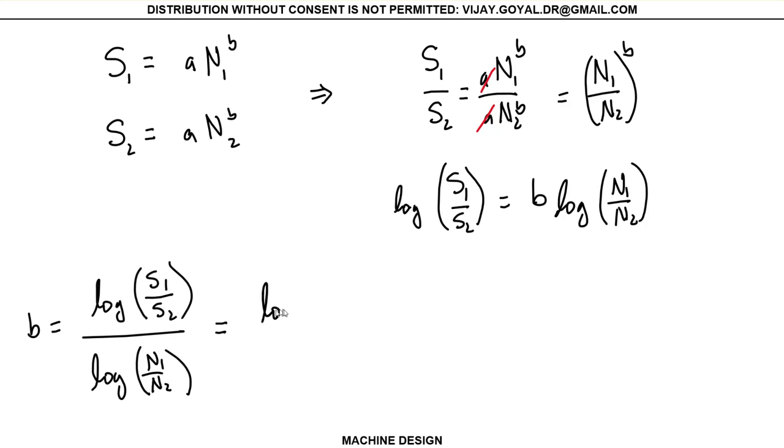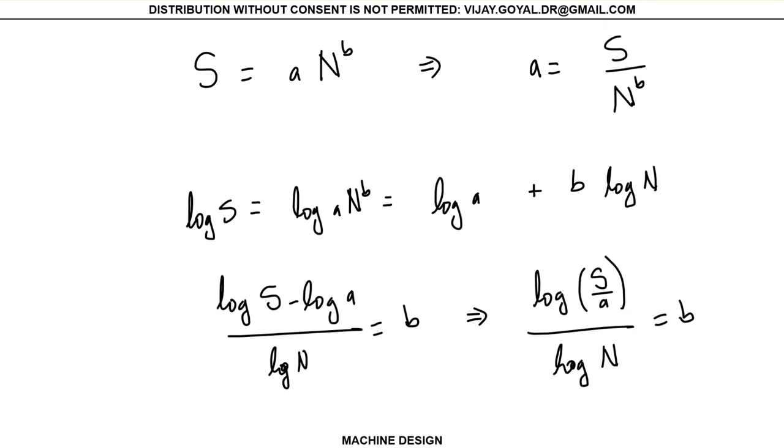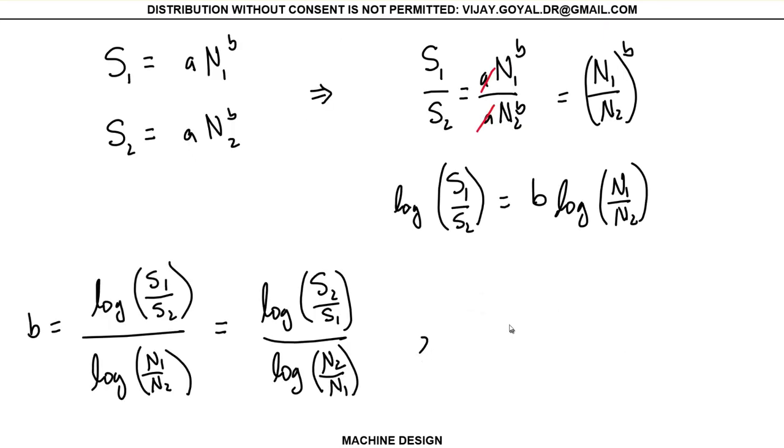Doesn't matter how you do this, you can flip it, but if you flip it, it's just a minus sign and there's another minus sign there. So you could do it either way and should give you exactly the same answer. So if I had my b, then I can just use this equation to find my a. Then I could say a is equal to S1 divided by N1 to the b. So that's how you will find the values of a and b.